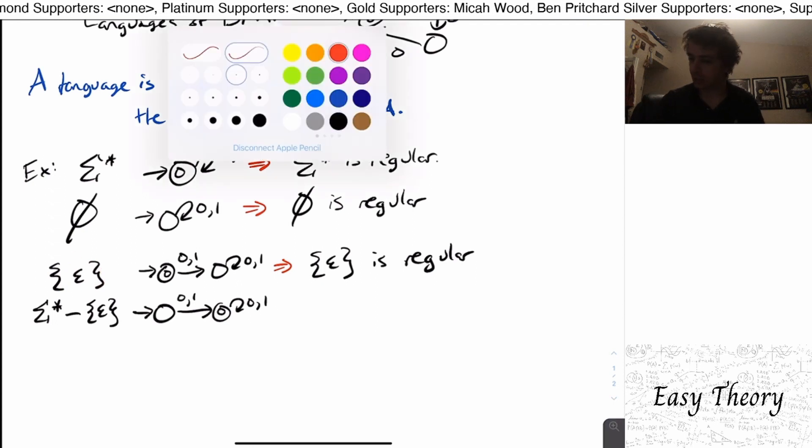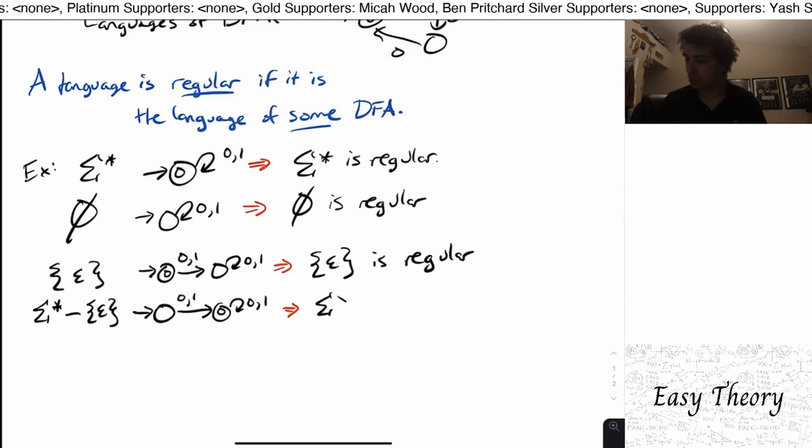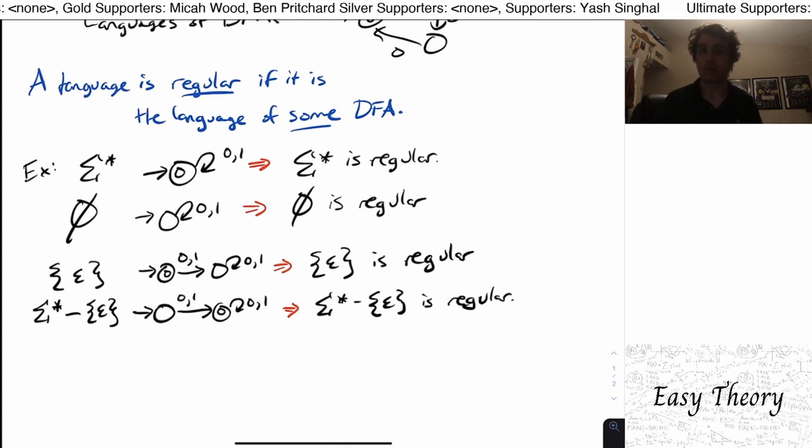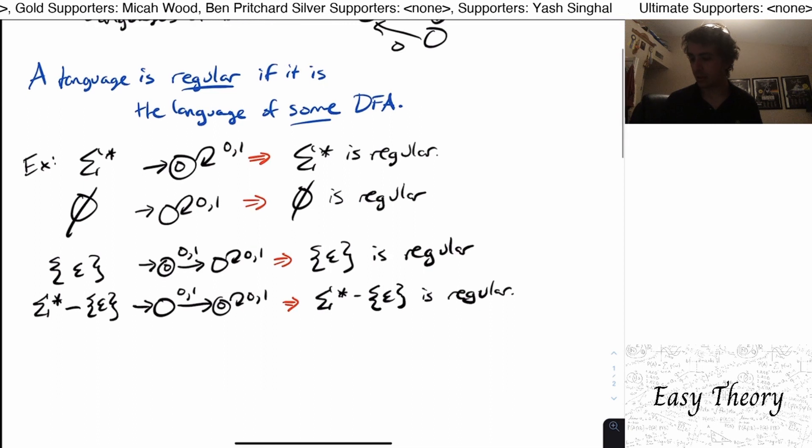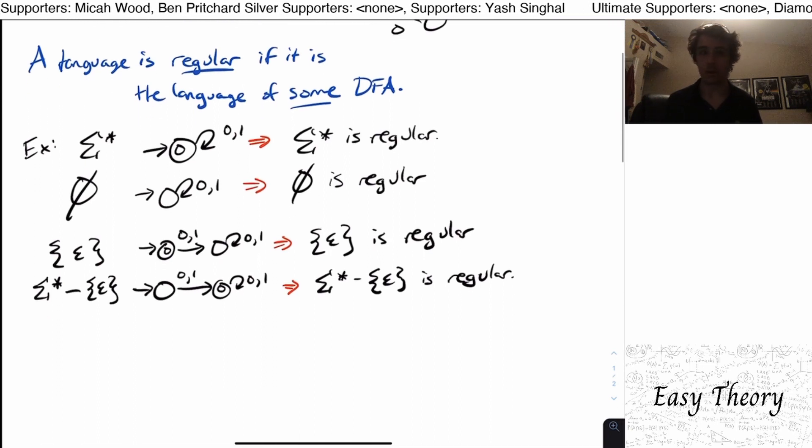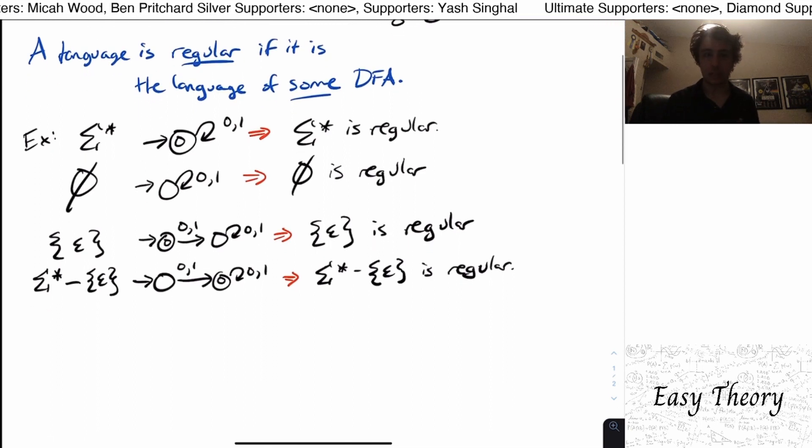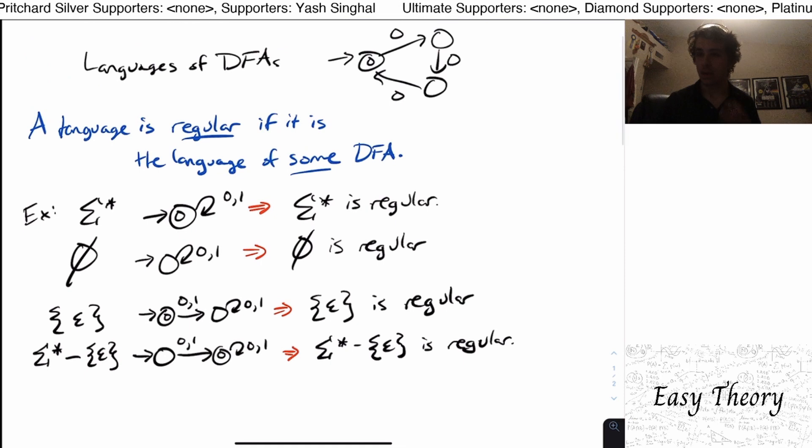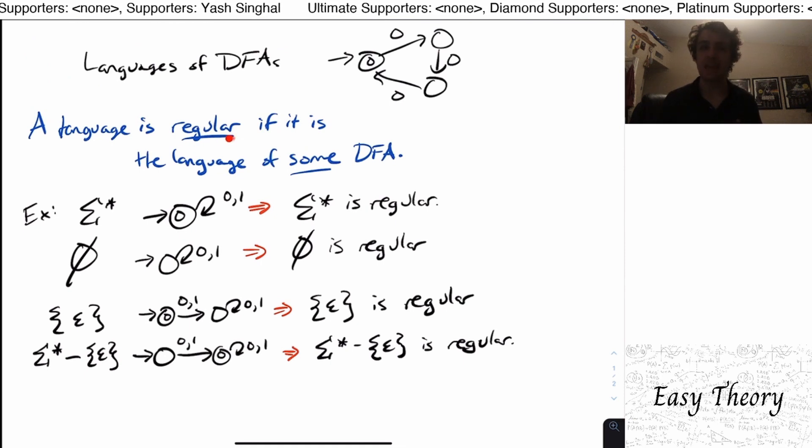So this, of course, implies that sigma star minus the empty string is also regular. And there are many other examples that you could find, you can actually make a DFA for. So these are a bunch of examples of some regular languages.